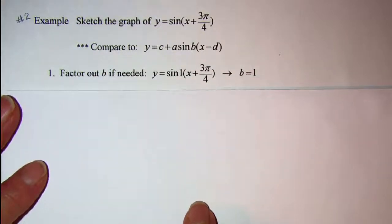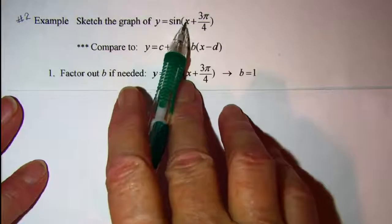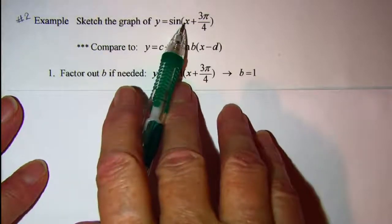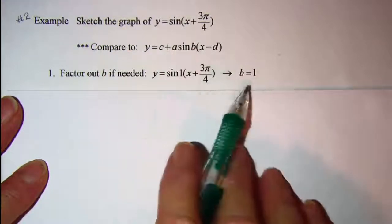The first thing we want to do is factor out b if needed. In this case the x is all by itself, there's no number other than 1 multiplied by x, so our b is 1.